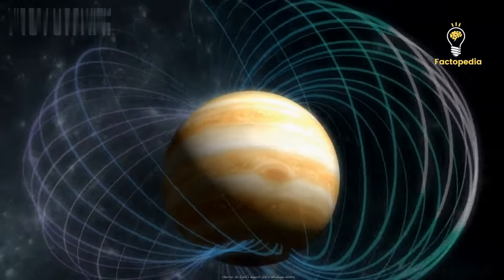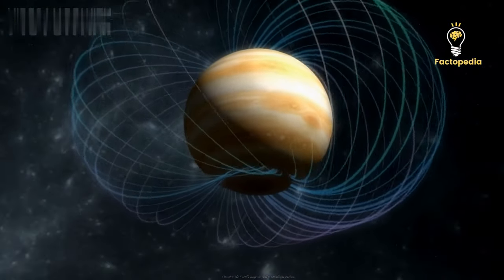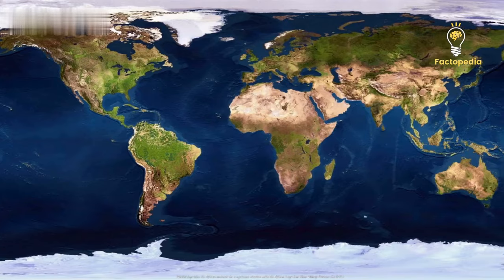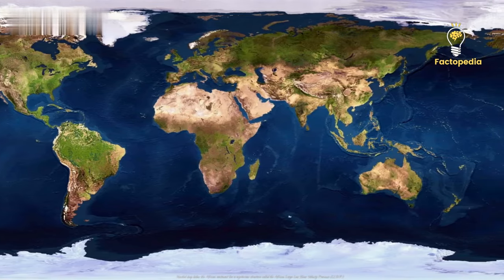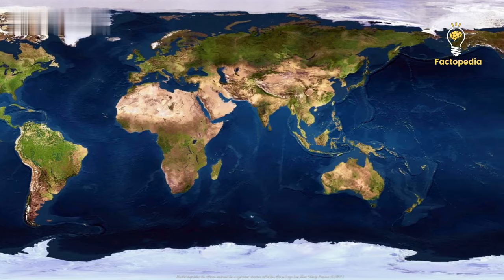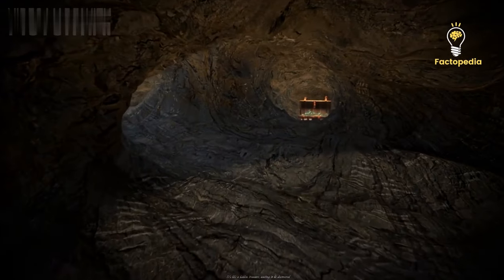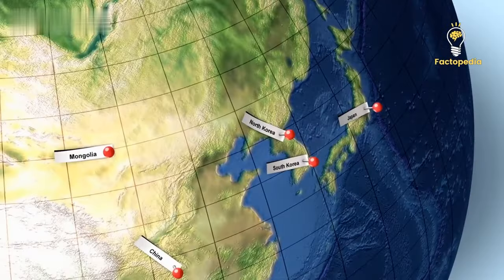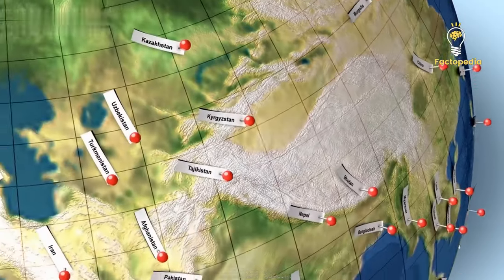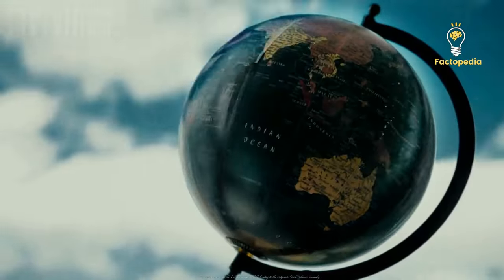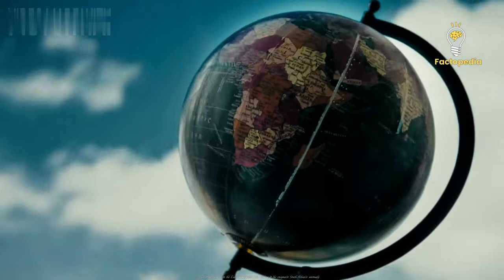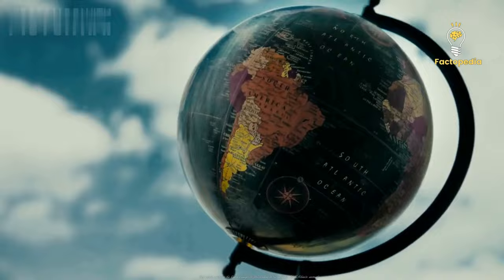However, the Earth's magnetic field is not always uniform. Nestled deep below the African continent lies a mysterious structure called the African Large Low Shear Velocity Province. It's like a hidden treasure, waiting to be discovered. LLSVPs are colossal formations that can span thousands of kilometers. They create a dent in the Earth's magnetic field, leading to the enigmatic South Atlantic anomaly.